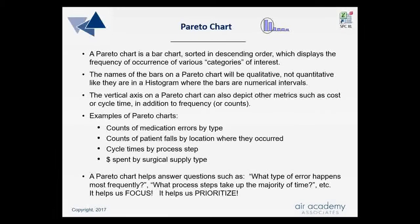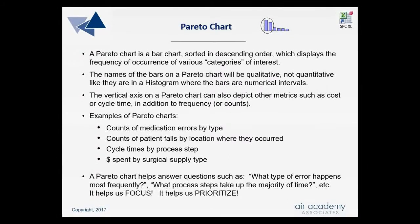A Pareto chart is a bar chart where the bars are sorted in descending order and it displays the frequency of occurrences of various categories of interest. The names of the bars on a Pareto chart will be qualitative, not quantitative like they are in a histogram where the bars are labeled as numerical intervals. The vertical axis on a Pareto chart can also depict other metrics such as cost or cycle time in addition to frequency or counts.